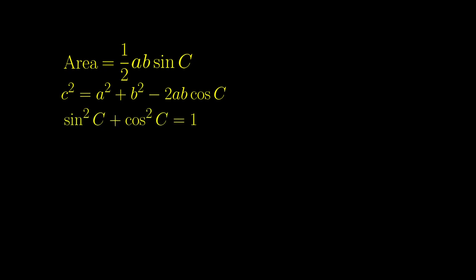Then we have one final identity. The sum of sine squared and cosine squared of any angle is 1. Now armed with these three facts, we are ready to turn on the algebra machine.